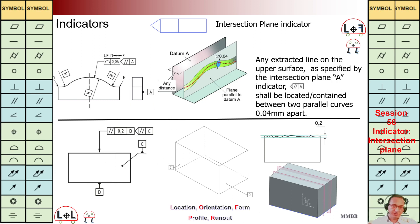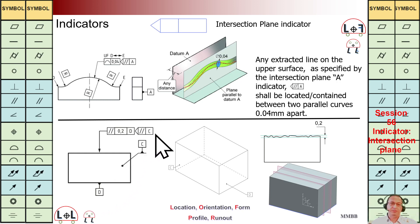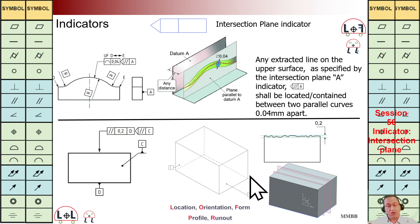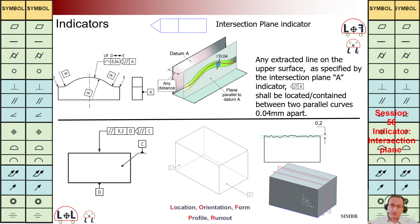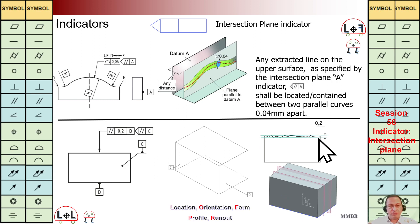Let's see the second example here at the bottom. We are going to have this parallelism of the top surface with respect to D, and we have this intersection plane indicator — parallel to C. We are going to have many planes parallel to C, as shown here. We need to extract the line between those planes parallel to C and the top surface. We are going to have many lines and each line should be within that tolerance zone 0.2.